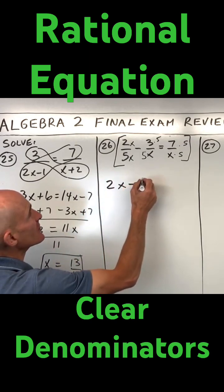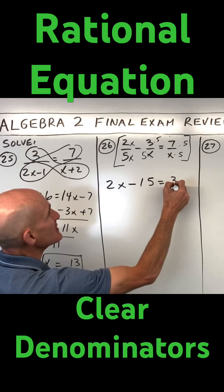So we're just going to be left with the numerators, which is going to give us 2x minus 15 equals 35.